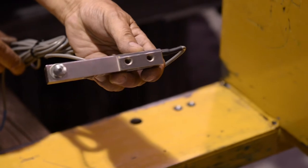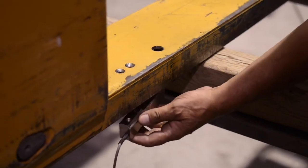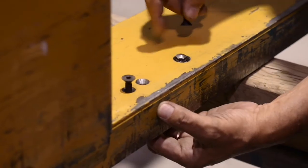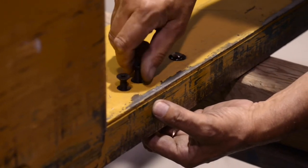Next, install the load cells using the ones marked rear for the back and the ones marked front for the front. Using the flathead allen screws, fasten the rear load cells.